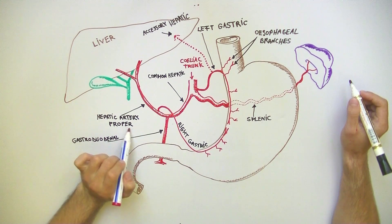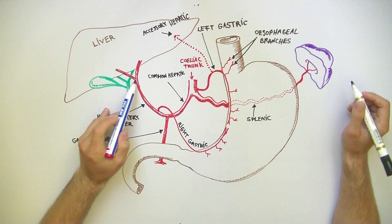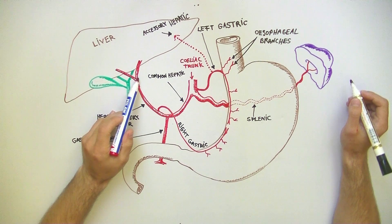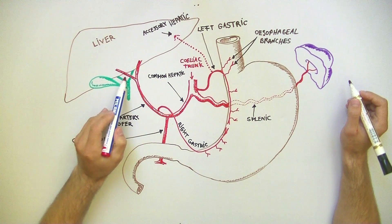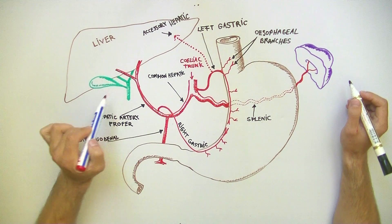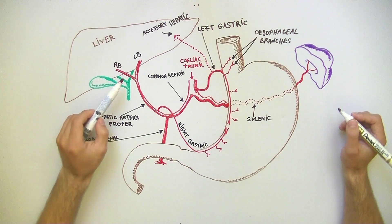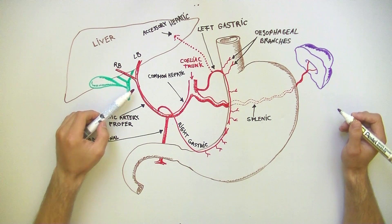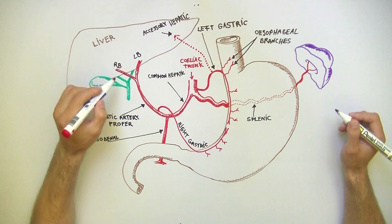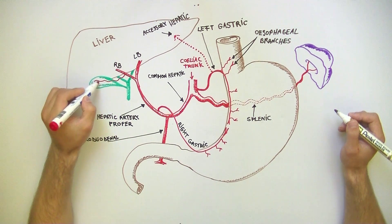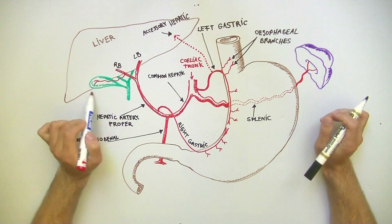The hepatic artery proper will supply the liver, giving off two branches: the left branch for the left lobe and the right branch for the right lobe of the liver. From the right branch of the hepatic artery proper will arise the cystic artery, which will supply the gallbladder.